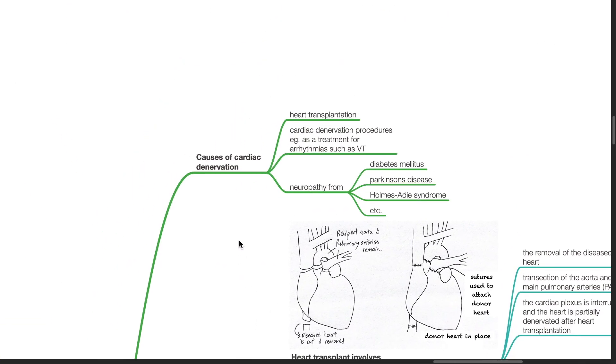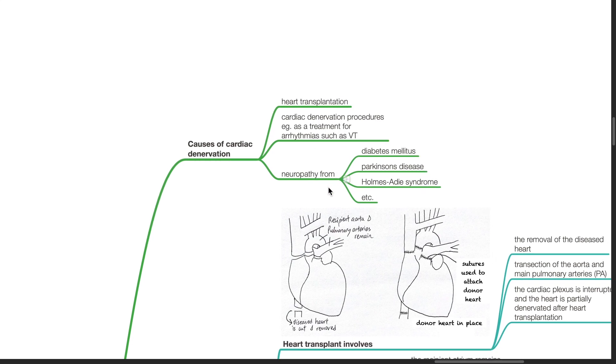Causes of cardiac denervation include heart transplantation, cardiac denervation procedures such as treatment for arrhythmia like VT, and neuropathy from diabetes mellitus, Parkinson's disease, Holmes-Adie syndrome, etc.